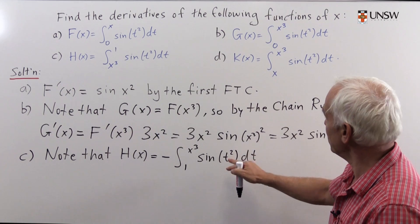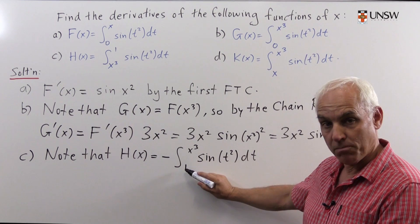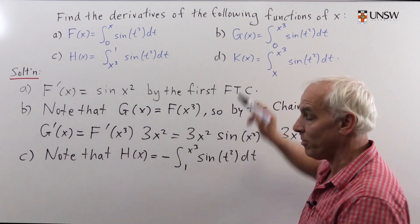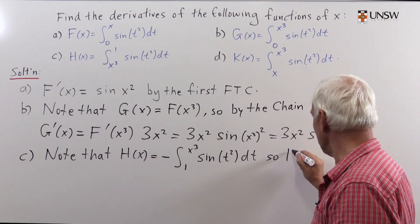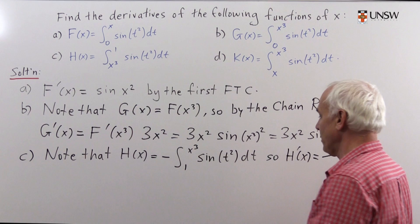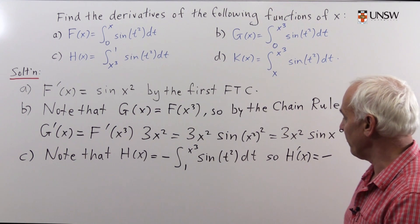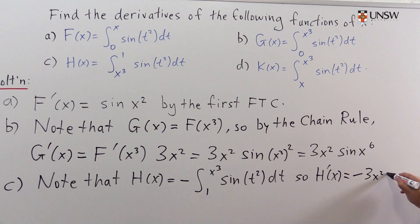We're in the same situation as with G(x). There's a small difference because the lower constant is 1 instead of 0, but that doesn't matter. So H'(x) will have a minus sign, and then it's essentially the same as before: -3x² sin(x⁶).